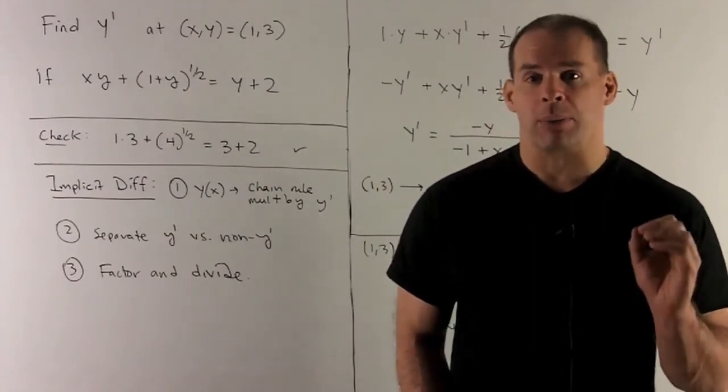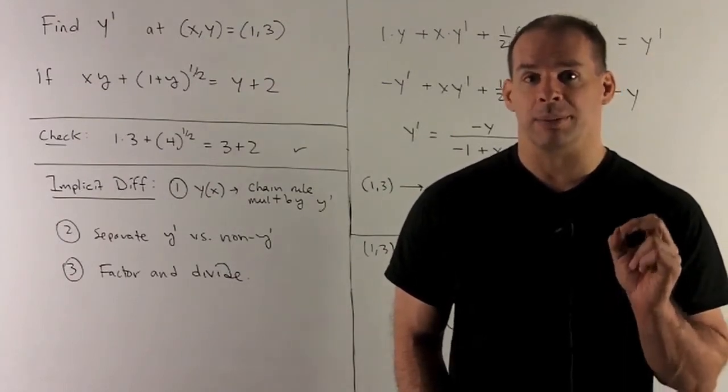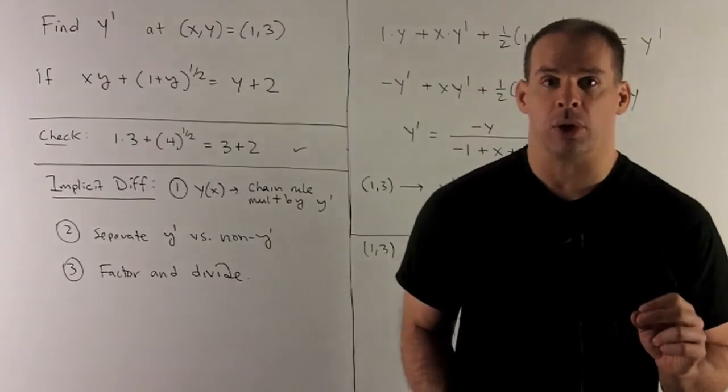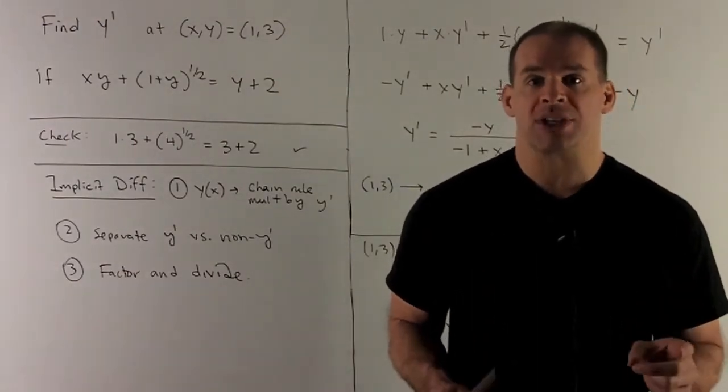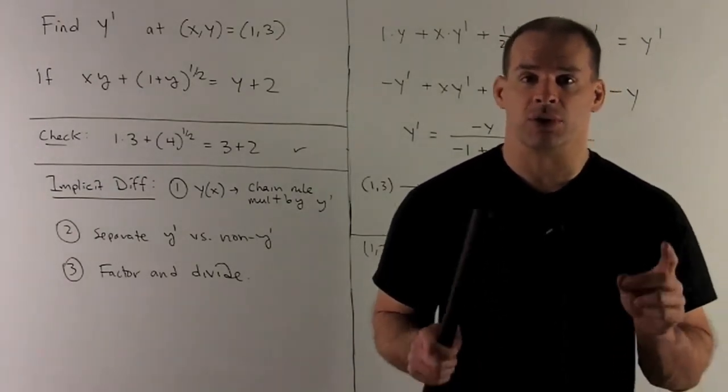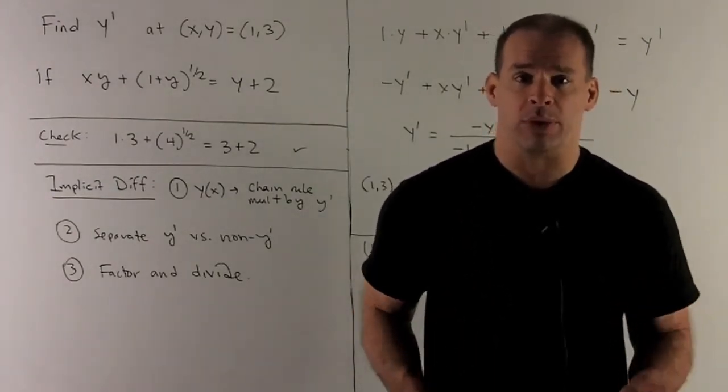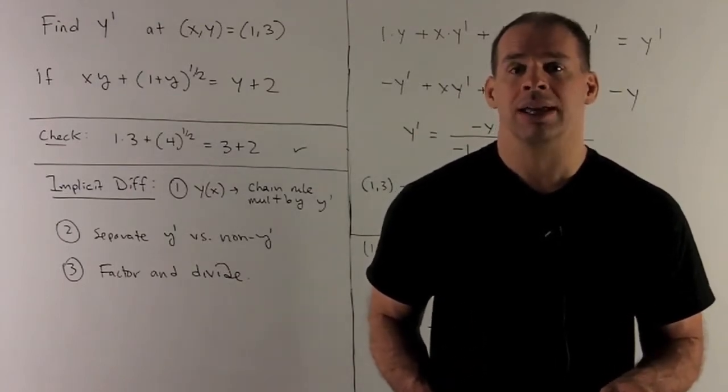Now to get y prime, what are we going to need to do? We're going to need to go through this business of implicit differentiation. Two things to note. First, we have an equation. We're going to hit both sides with derivative with respect to x. So if two things are equal, when I hit them with those derivatives, what comes out will be equal also.